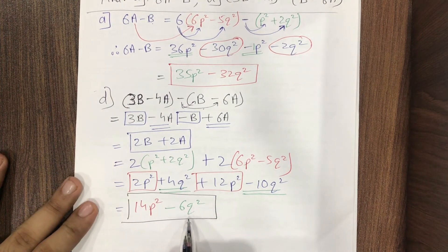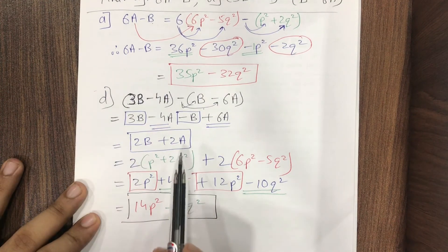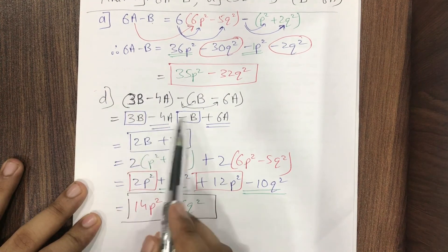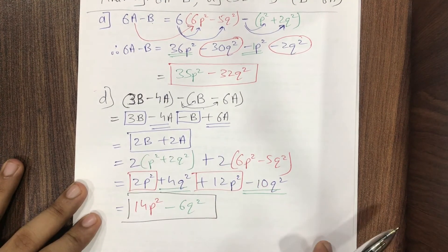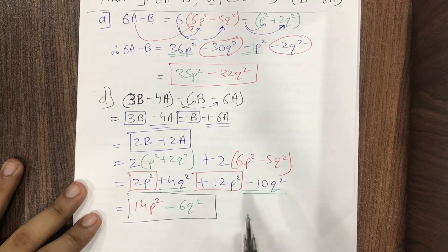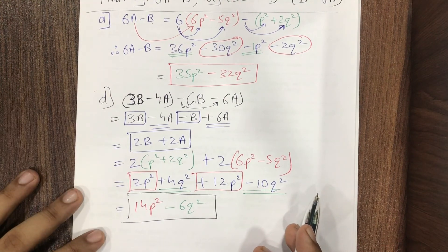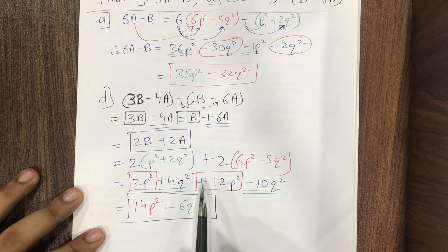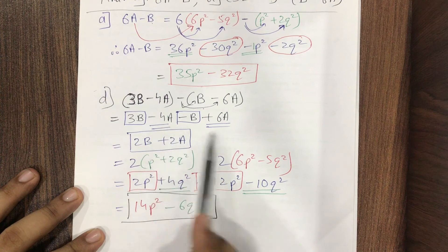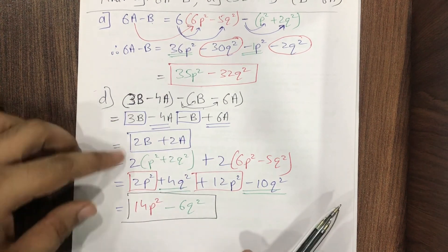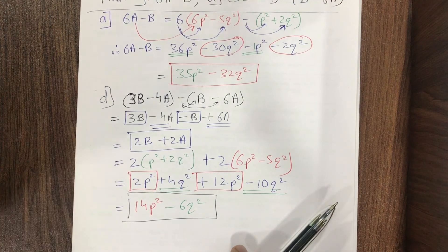Combining like terms: 2p squared plus 12p squared gives 14p squared; plus 4q squared minus 10q squared gives minus 6q squared. So the final answer is 14p squared minus 6q squared. Please use pencils to draw boxes and underline like terms, leave lines between every step, and make your work clearly presentable.